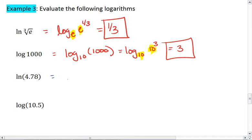Ln of 4.78 is the same as log base e of 4.78, which we could write as e to the x equals 4.78. But we don't know an easy way to solve that.